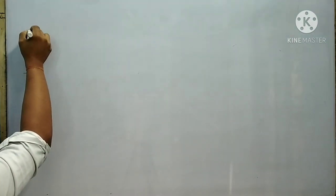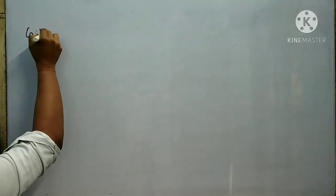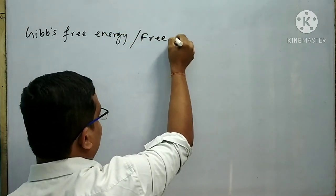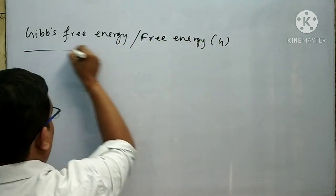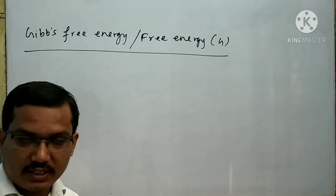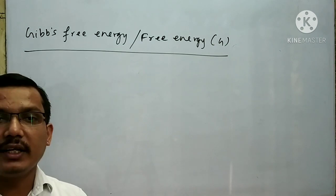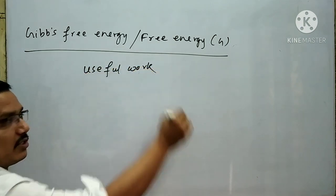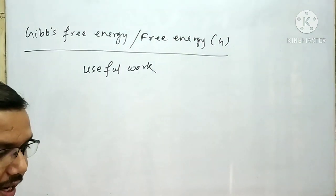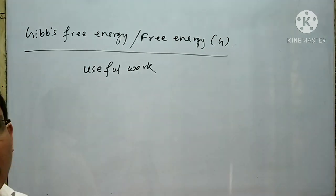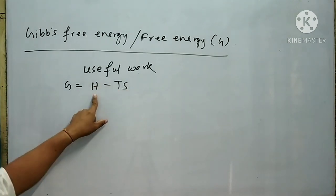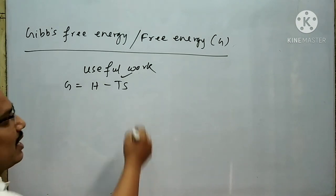Next, I want to explain a new term: Gibbs free energy, also called free energy, denoted by G. The maximum amount of energy available to a system during a process that can be converted into useful work is called Gibbs free energy. Mathematically, G = H − TS, where H is enthalpy, T is temperature, and S is entropy.